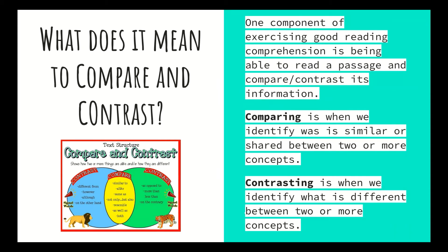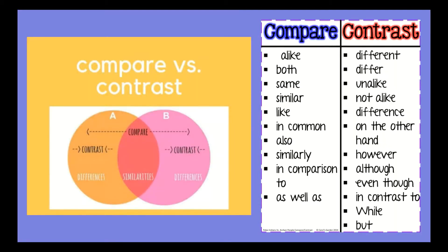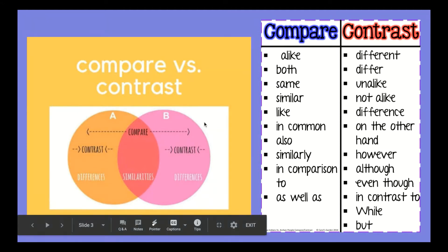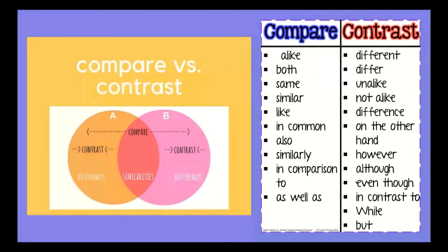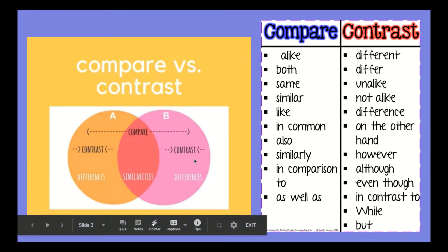Where the two circles overlap is what lions and tigers share — what is similar or the same between them. For example, lions and tigers are both large, feral predatory cats. If I was going to contrast lions and tigers, I would say tigers have stripes and lions have a large furry mane around their face, because that's something unique and different. I can look at a lion and a tiger and see those differences. This diagram is called a Venn diagram, and we use it a lot when comparing and contrasting because it provides a nice visual structure.